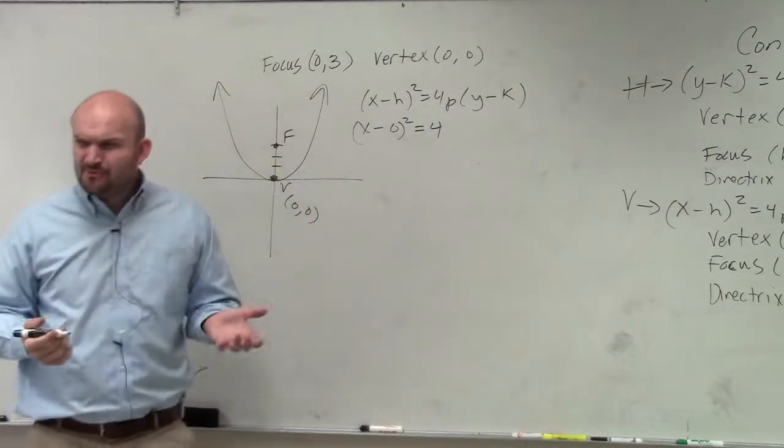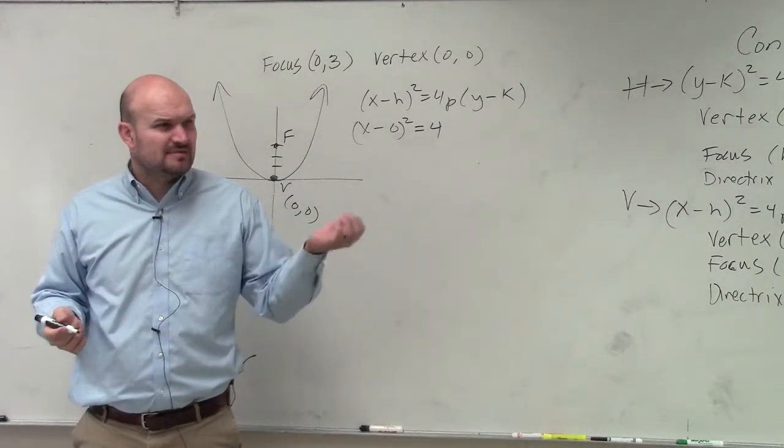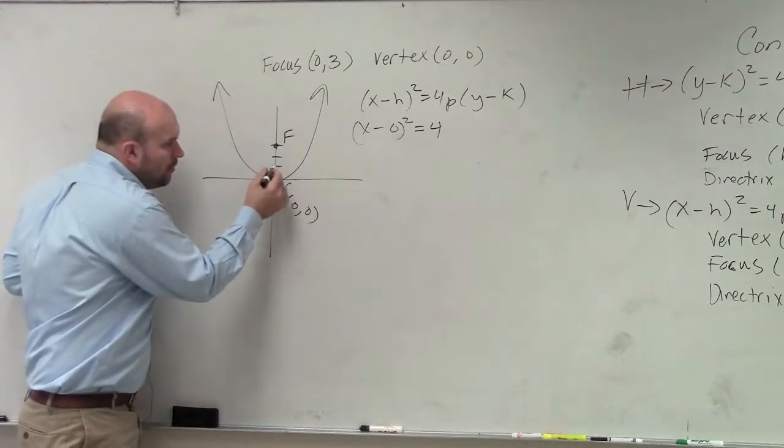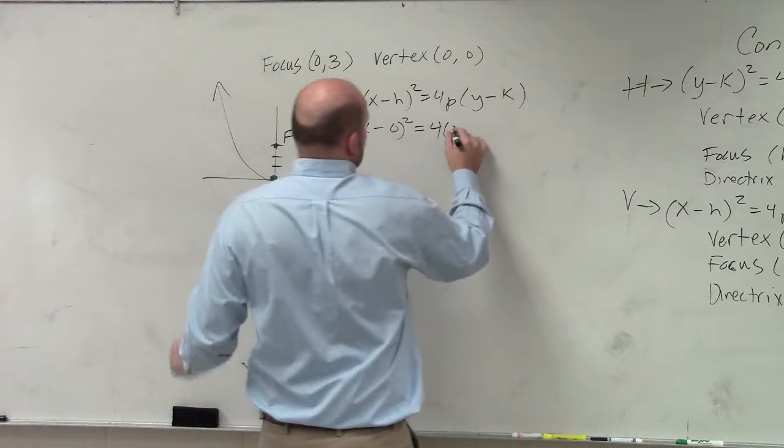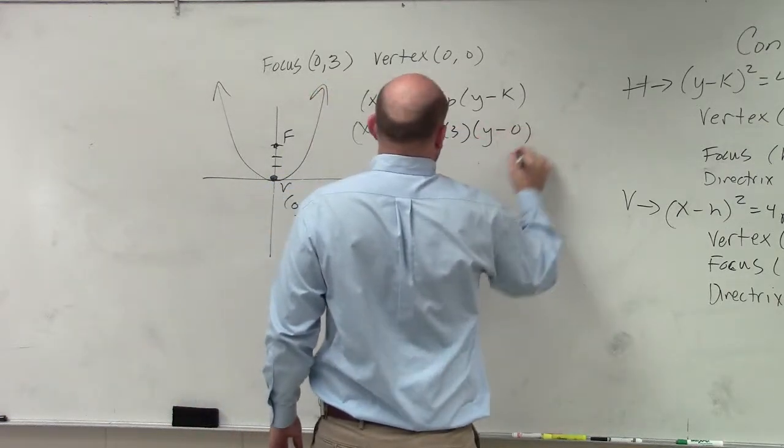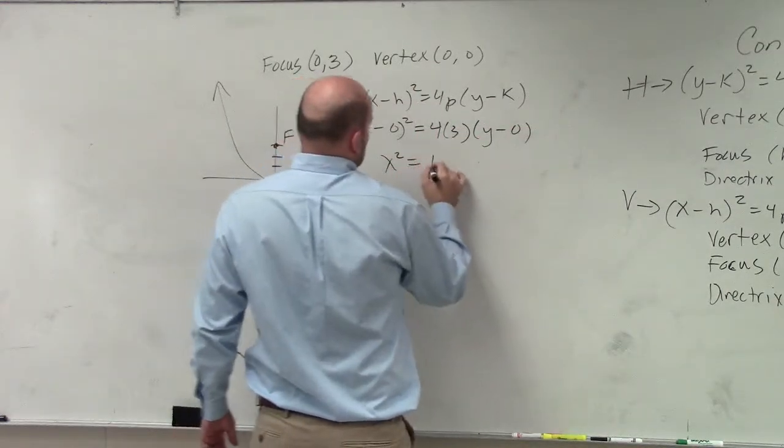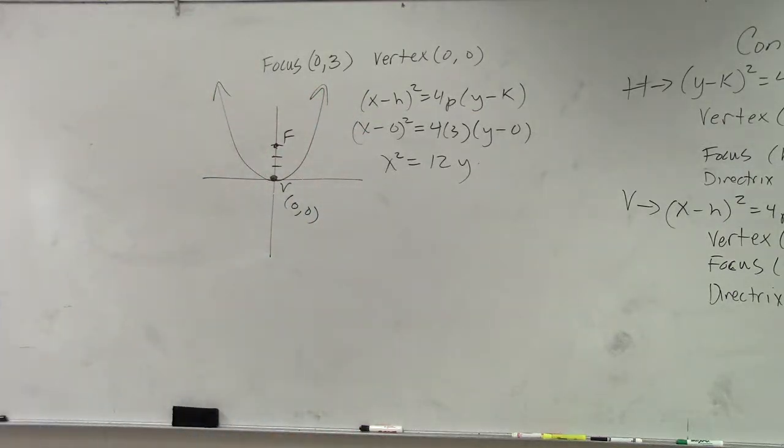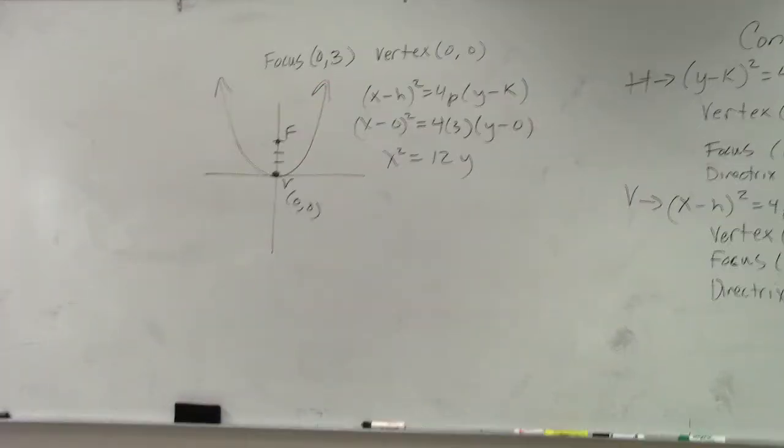So p, what did p represent? p was the distance from vertex to the focus. One, two, three.